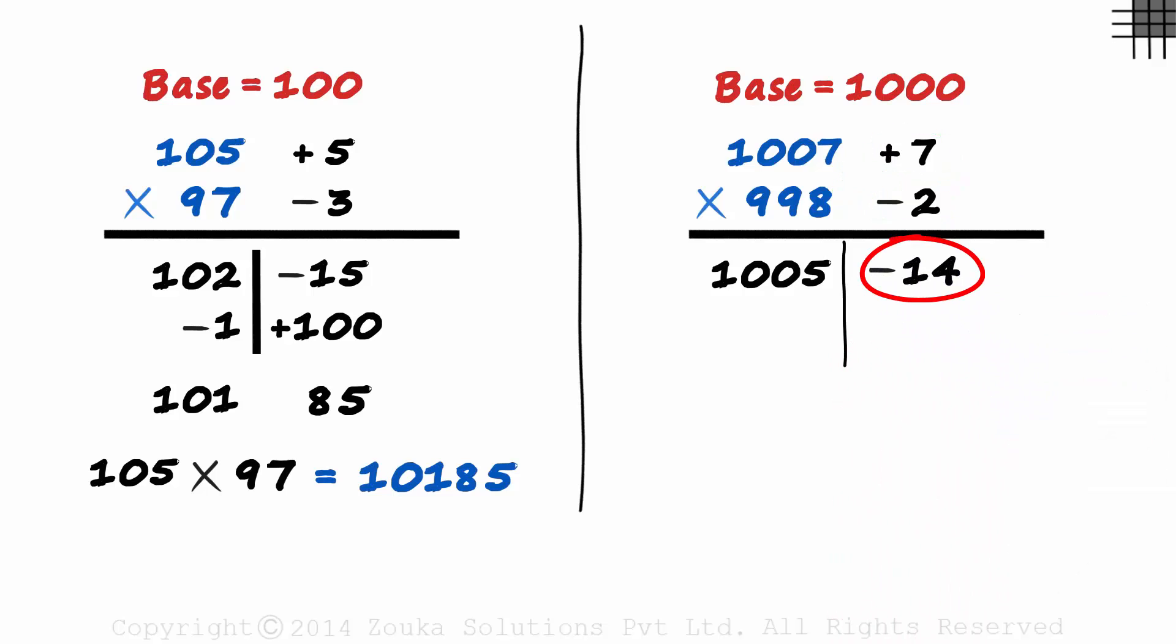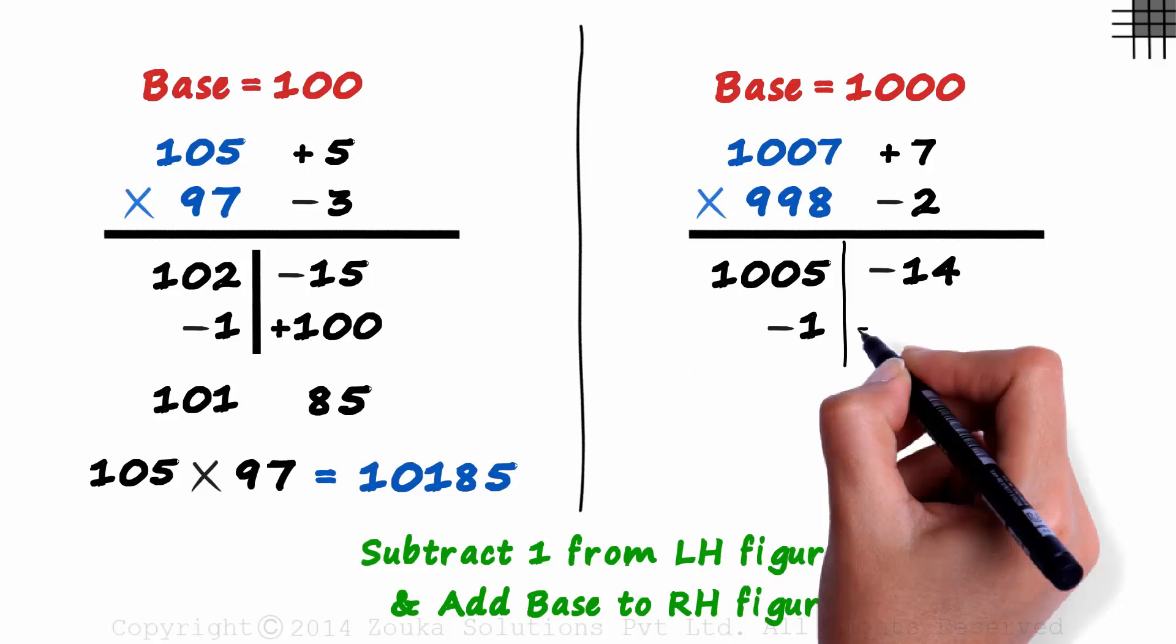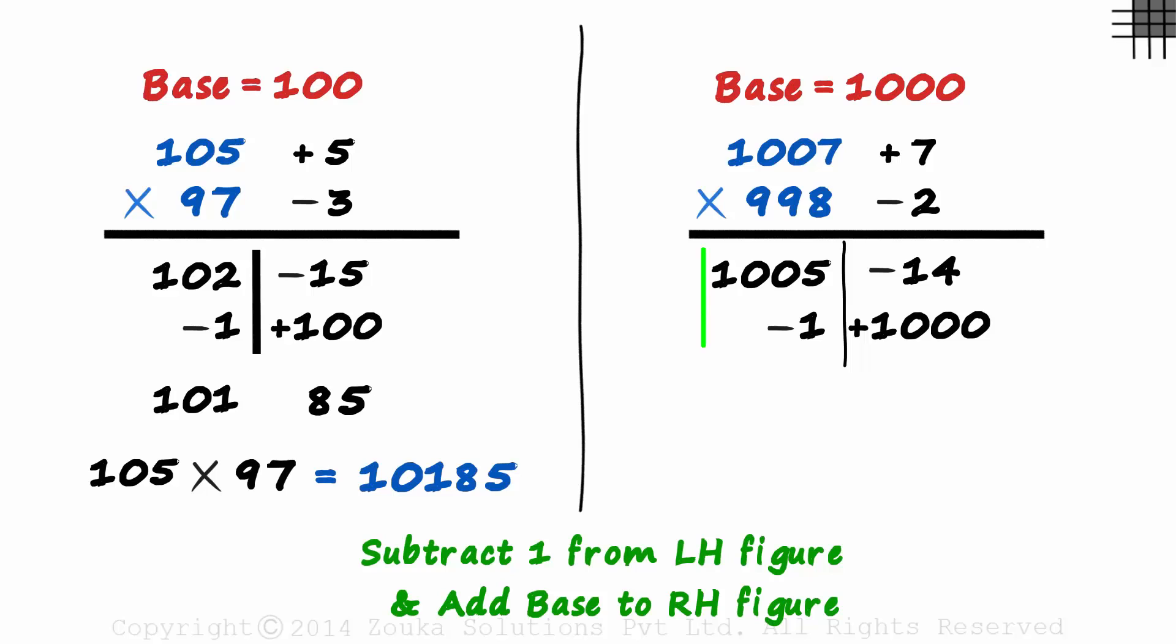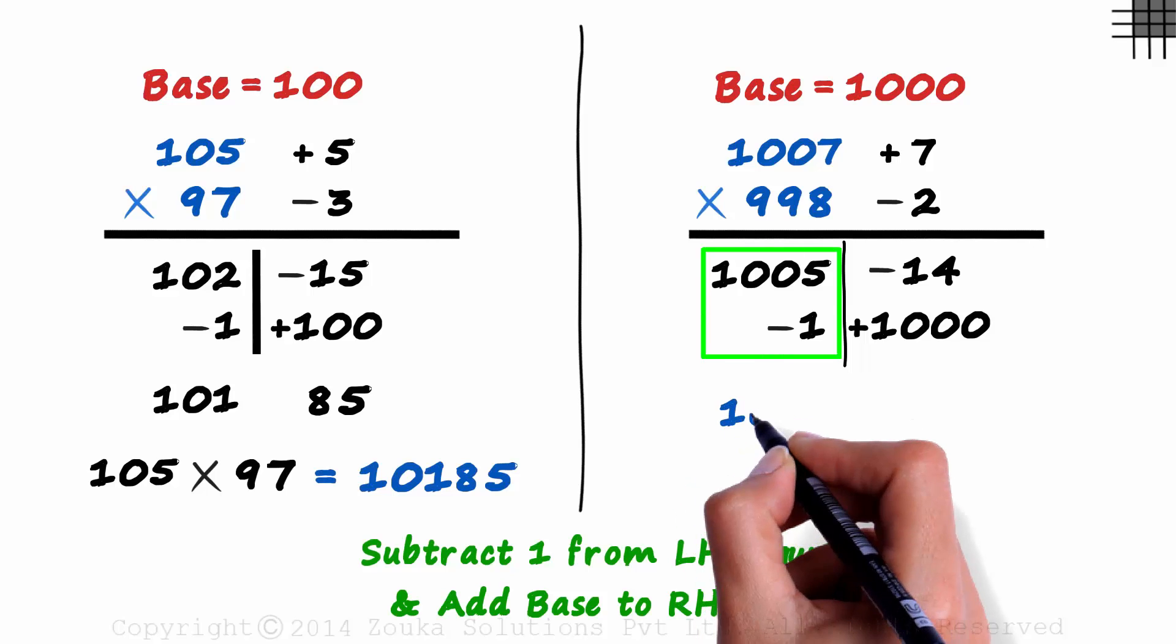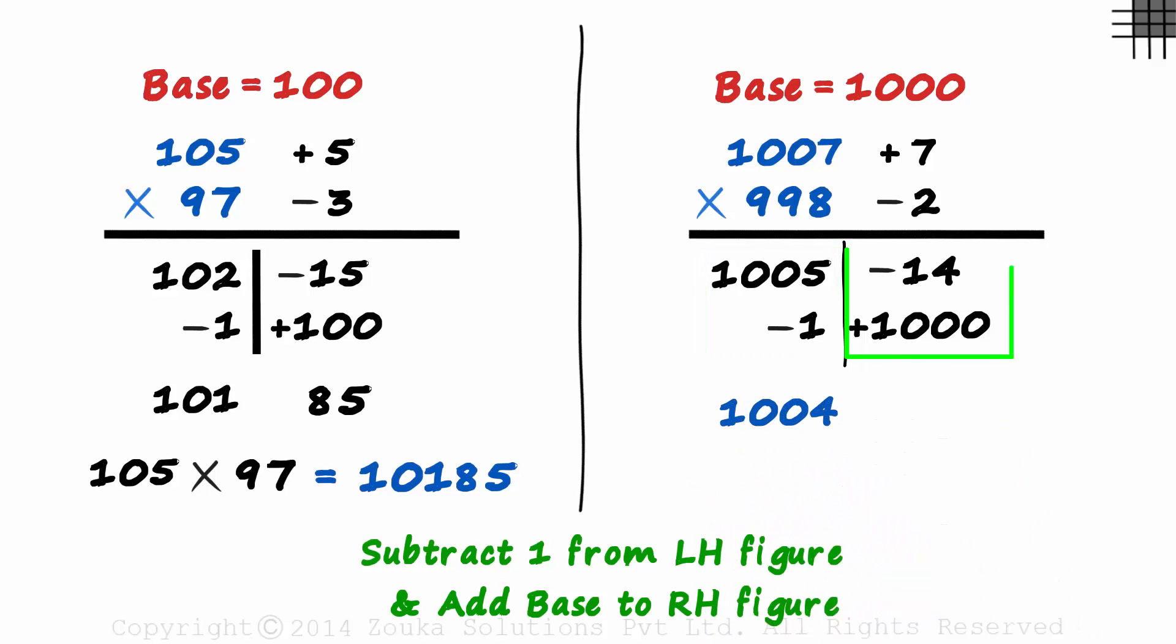What do we do when we have a negative number on the right hand side? We subtract 1 from the left hand figure and add the base to the right hand figure. Subtract a 1 and add the base. 1005 minus 1 is 1004, and 1000 minus 14 is 986.